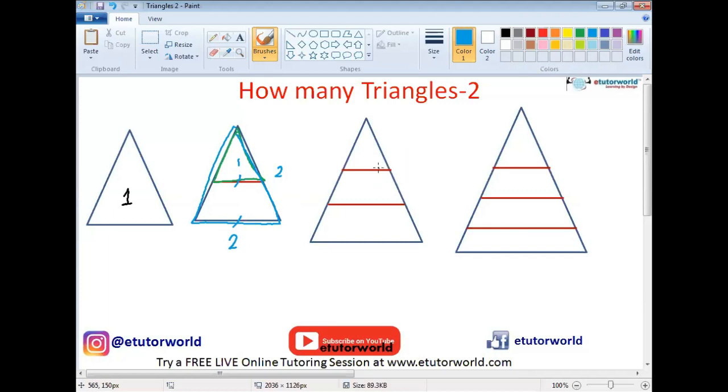Let's look at the next figure. Here, the horizontal lines are three. Therefore, three triangles will be formed in this triangle.